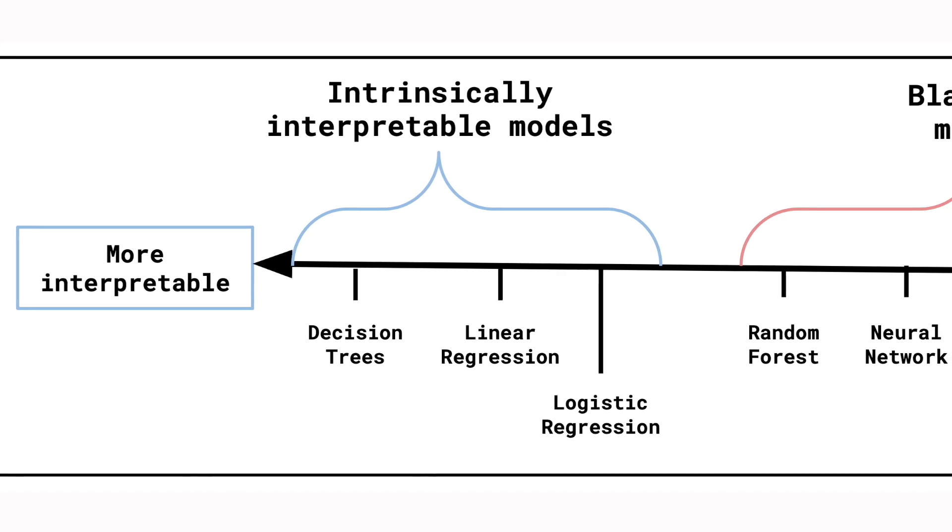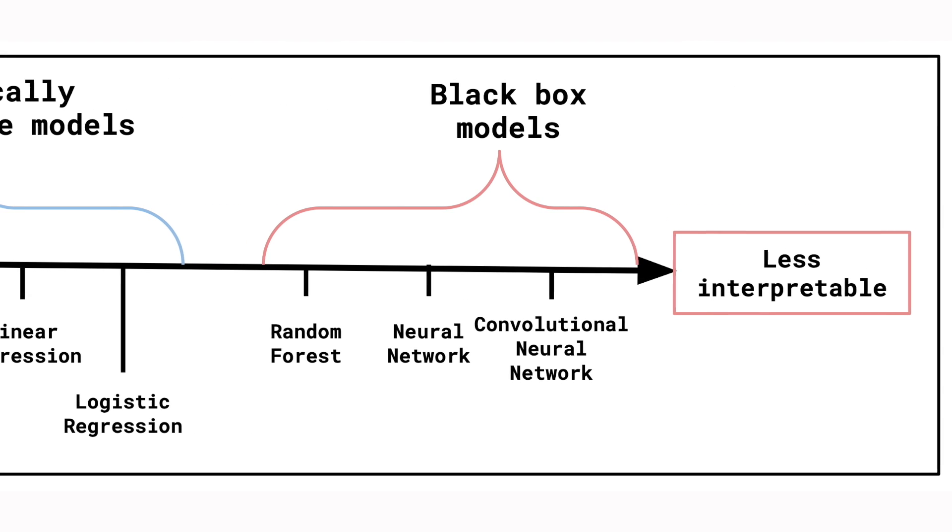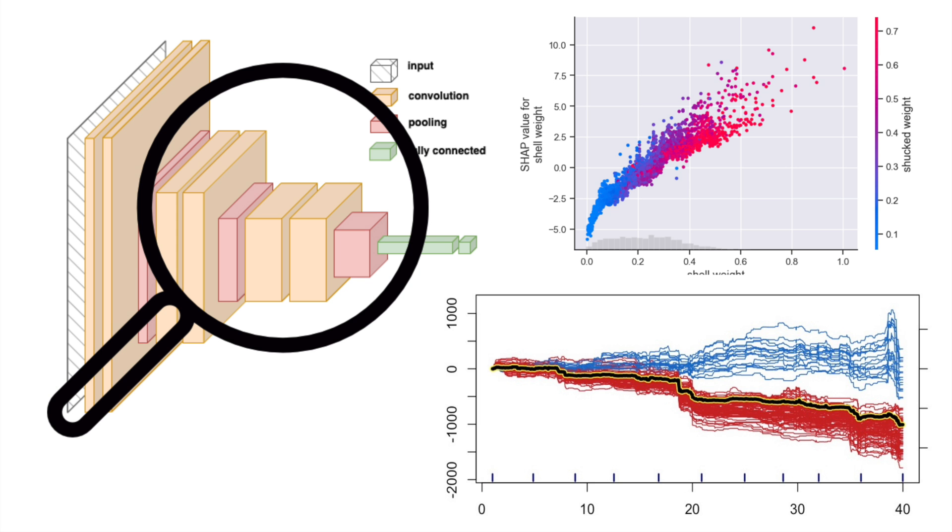These models are relatively simple — the decision tree has a few nodes and the linear model has three parameters. As models become more complicated, we can no longer understand them in this way. A machine learning model is a function: the model features are the inputs and the predictions are the outputs. A black box model is a function that is too complicated for a human to understand. An example is a random forest, made up of many decision trees whose predictions are all taken into account when making a final prediction. Even with a small number of trees, simultaneously understanding all of them would not be possible for a human.